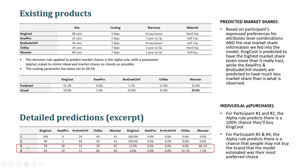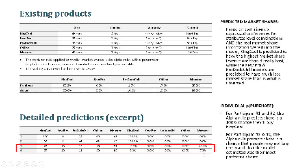But look at participants three and four. Participant three had a strong preference for Monster, which maps onto an 86% predicted probability of purchase, but also had a relatively high preference for King Cool, corresponding to a 13.9% prediction. For participant four, they really liked the Chillax model but were also pretty favorable toward Monster. The alpha rule predicts they will overwhelmingly purchase the Chillax model, but there's still a chance they'll purchase the Monster instead.